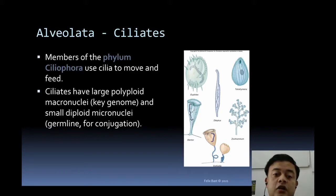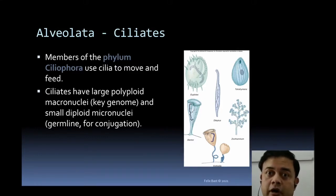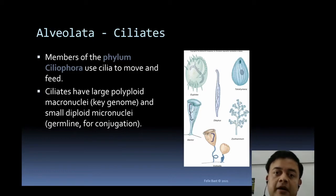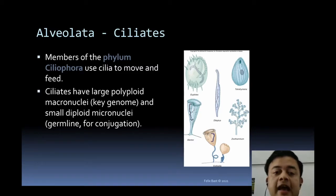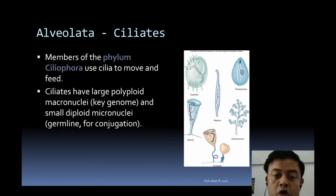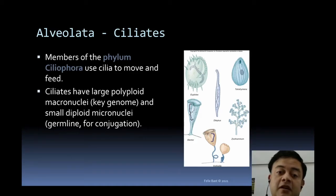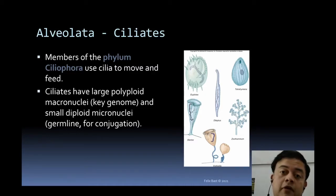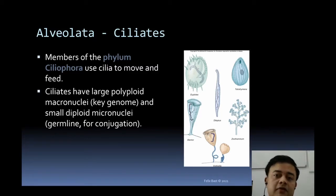Ciliates are a very important member of the alveolates, belonging to the phylum Ciliophora. They use cilia for both locomotion and feeding. Ciliates have a large polyploid macronucleus — where the entire genome is duplicated or triplicated — and also small diploid micronuclei. The micronuclei are mainly used for sexual exchange via conjugation, which is usually associated with bacteria but is also found in ciliates.